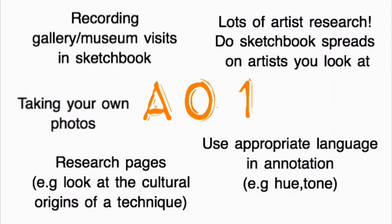Make sure you mention what you want to take from their work and put into your own work — for example, their technique, their colour scheme, or their use of shapes. You also get marks for taking your own photographs, so make sure you specify in your sketchbook if it's your work. You can pick up some more marks by using sophisticated language when annotating your own or someone else's work — examples include understanding words such as hue and tone and using them accurately.